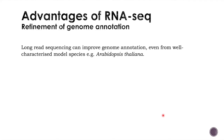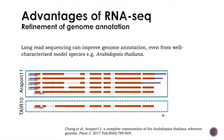You can also use RNA-seq to refine a genome annotation. Third-generation sequencing produces long reads that can improve genome annotation even from well-characterized model species such as Arabidopsis. In a recent paper, two annotations from Arabidopsis were compared — the previous one called TAIR10 and a new one called ARAPORT11 — and even for well-characterized genes, many splicing variants could be discovered, with UTRs, exons, and introns arranged in different ways.